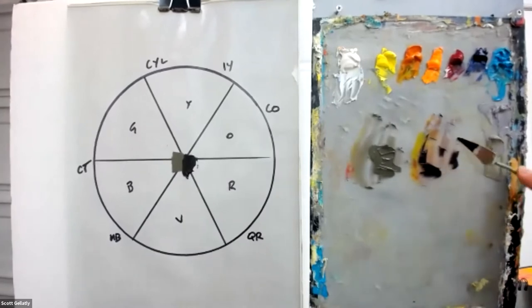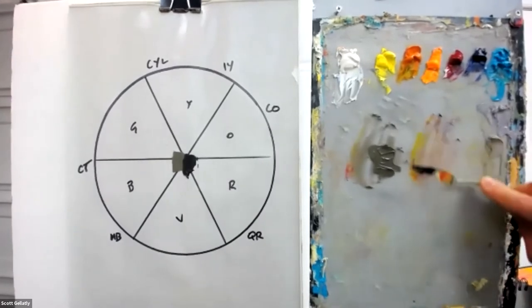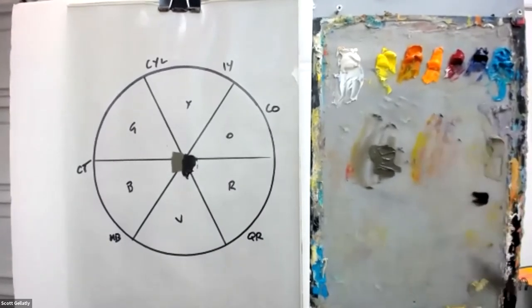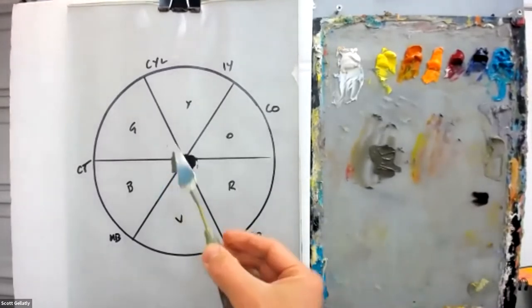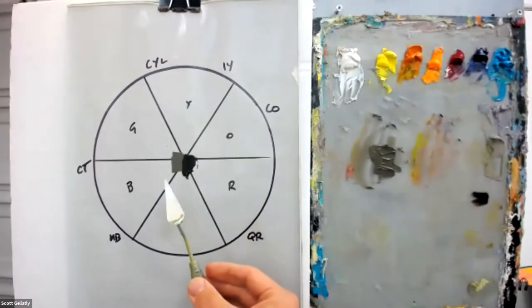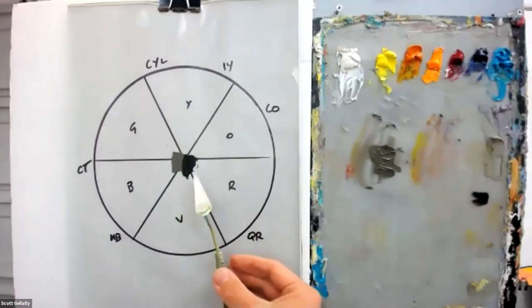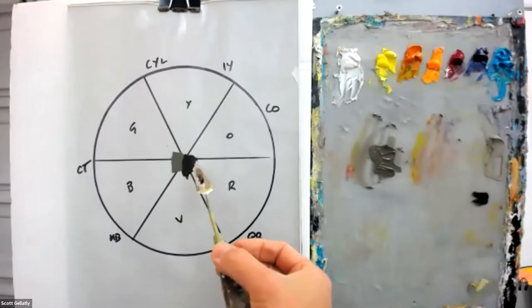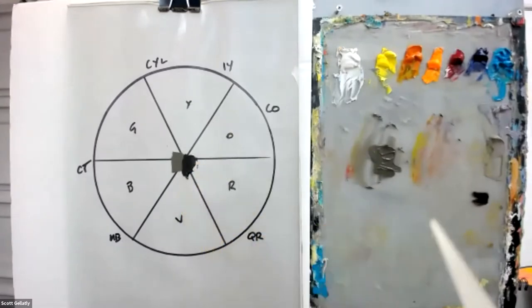And really the main difference that's accounting for that value change is that with the opaque colors, the light is reflecting right off the surface of that mixture. Versus with the transparent, that light is penetrating into that paint layer. And only a small amount of that light is reflecting back out of it.